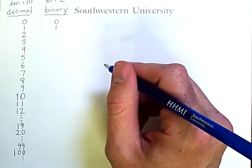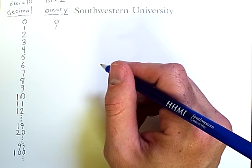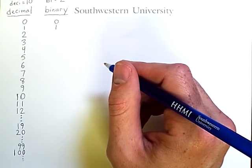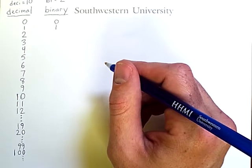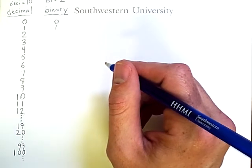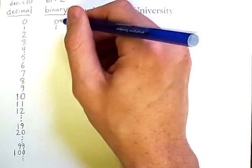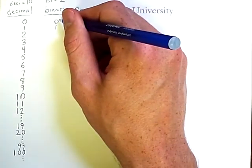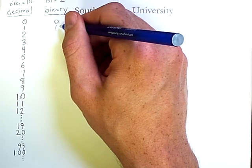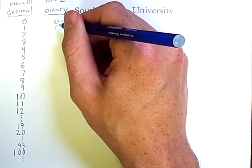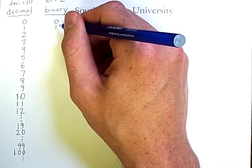And the reason this system is relevant to computers is because it is an easy way of representing the presence or absence of electrical voltage. So everything in a computer is represented using binary numbers, but when we use binary, we quickly run out of digits.